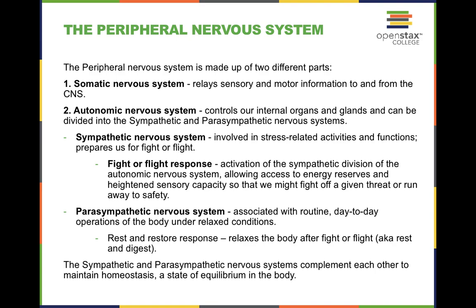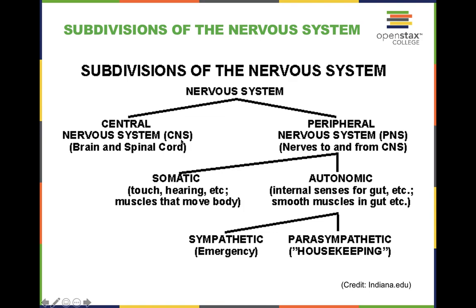The peripheral nervous system strictly focuses on your nerves. We break that down further into the somatic nervous system as well as the autonomic nervous system. The somatic nervous system includes all voluntary control, such as moving your arm, moving your leg, walking, running — things that you can voluntarily control. When it comes to your autonomic nervous system, think of autonomic as automatic. You don't have to tell your stomach to digest or your heart to beat — it just does it automatically.